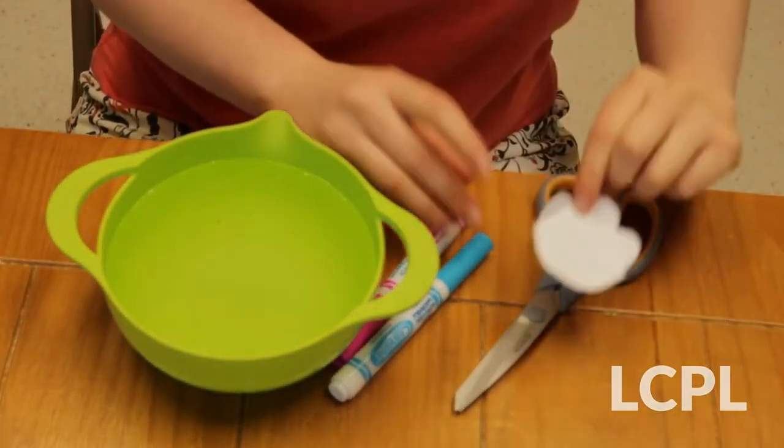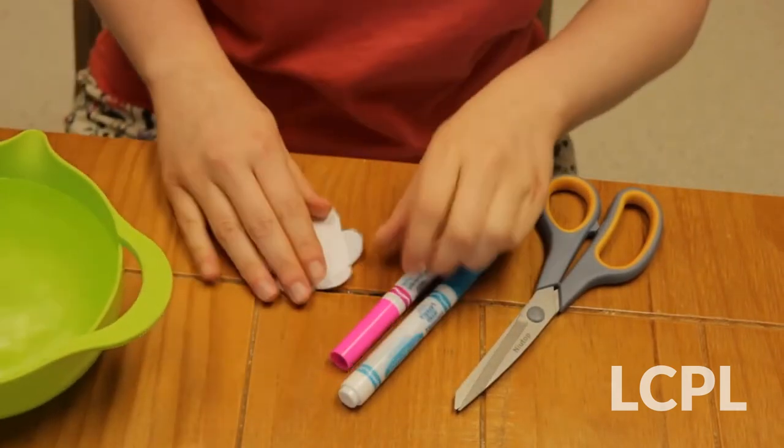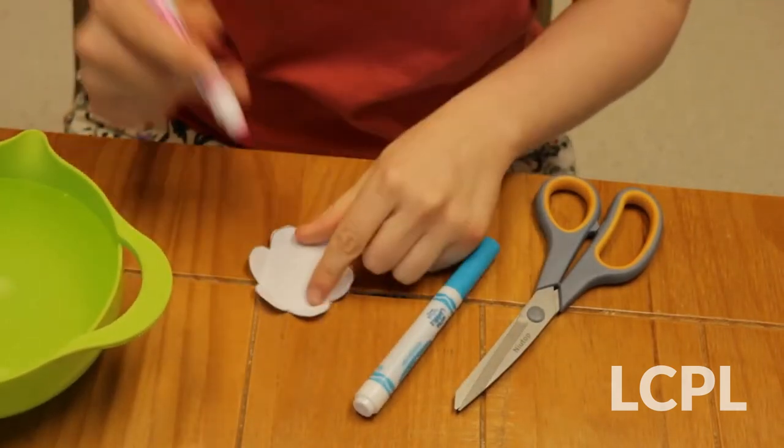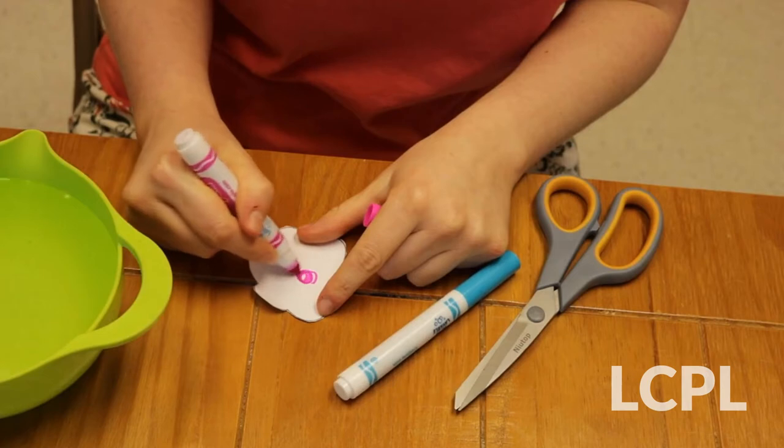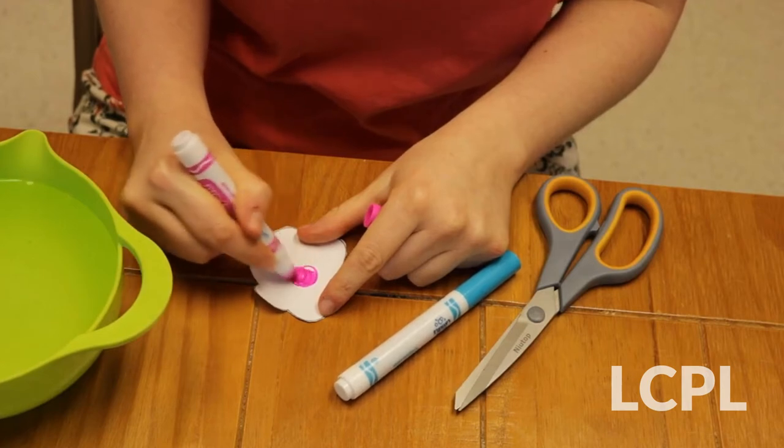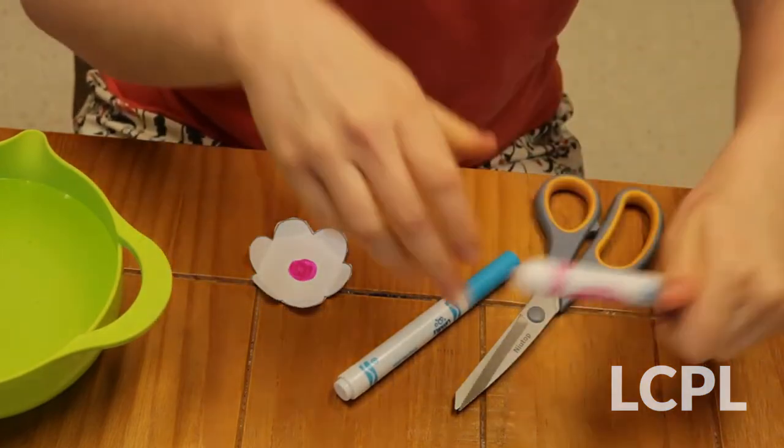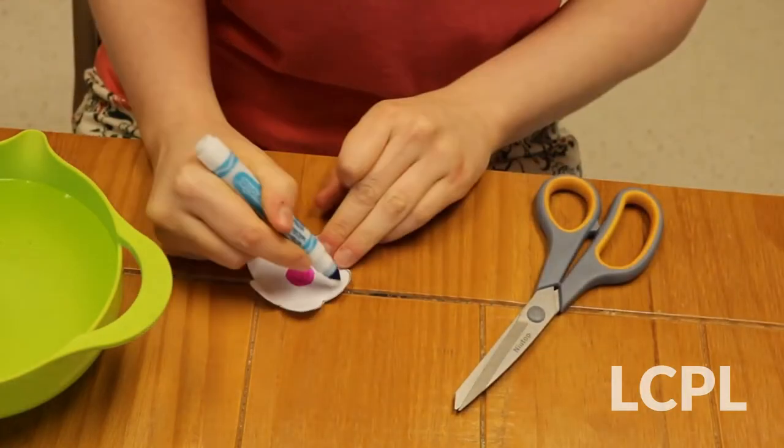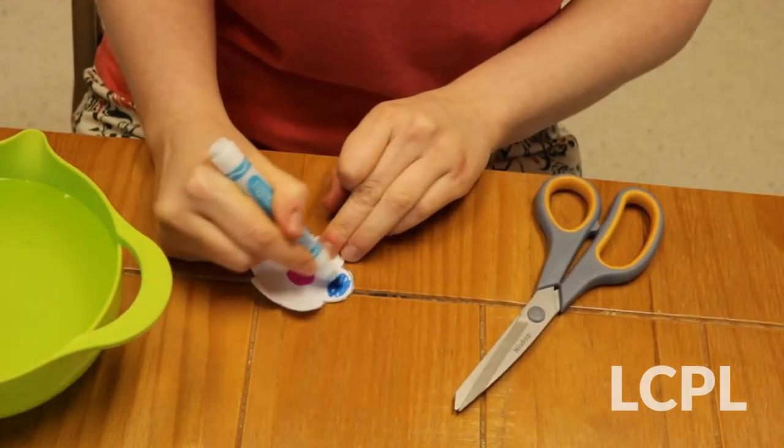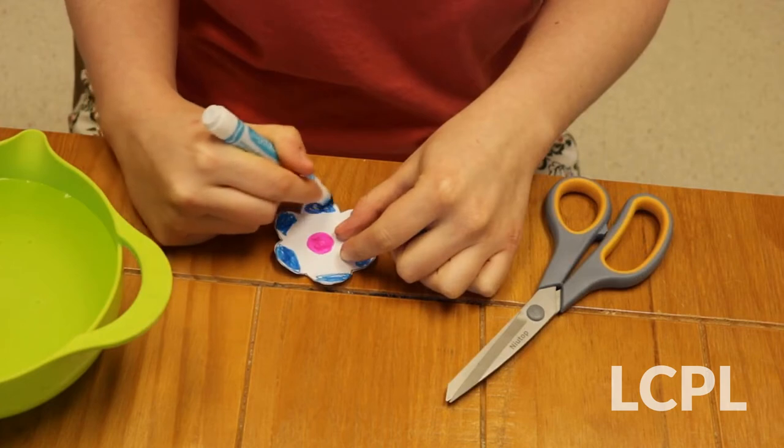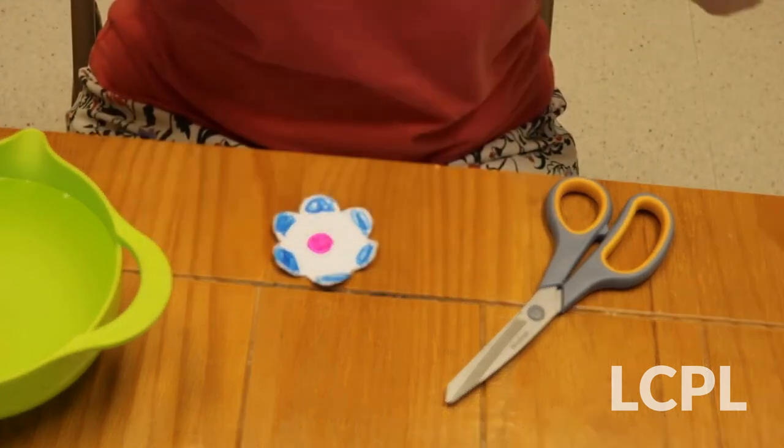So what you're going to want to do with your flower is color it. Go ahead and do whatever colors you want. I'm just going to do a little dot in the middle and some blue for the petals.